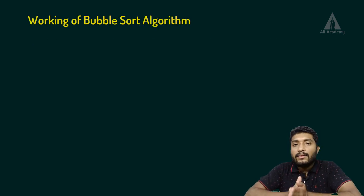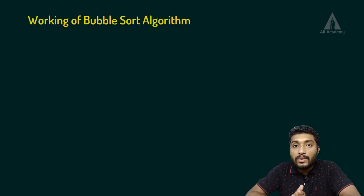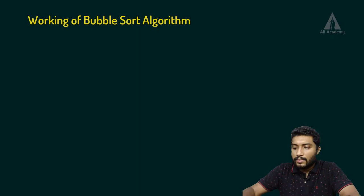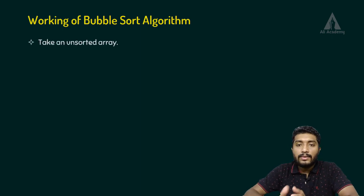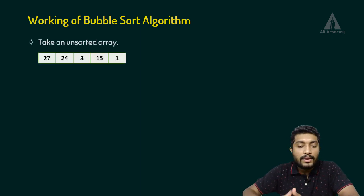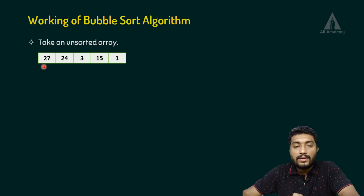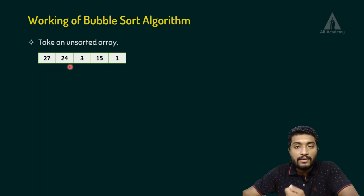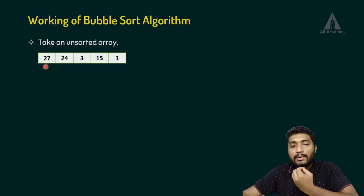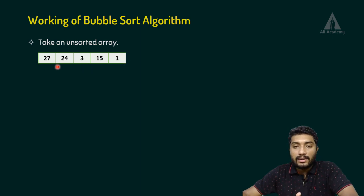So, the working of bubble sorting — let's look at that. We have a particular unsorted array. Our array is an integer array with 5 elements that we need to sort.